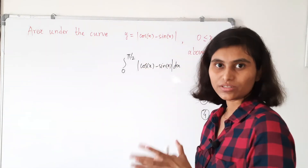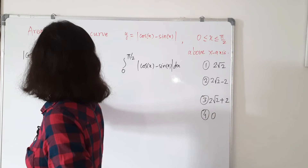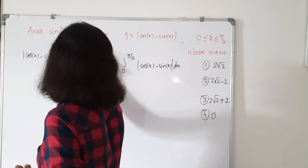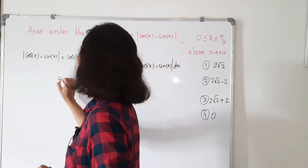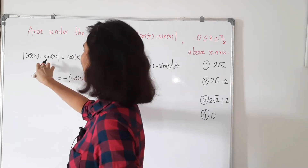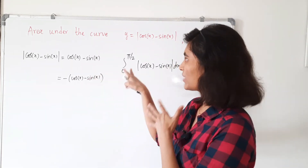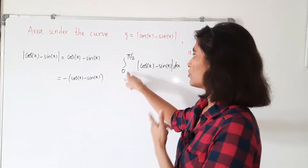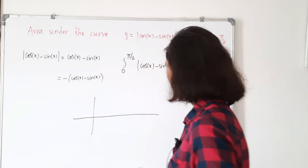Here the modulus plays an important role. |cos x − sin x| equals cos x − sin x when cos x − sin x is positive, and equals minus (cos x − sin x) when cos x − sin x is negative. So we just need to find the values of x where cos x − sin x is positive and negative for x between 0 and π/2. The easiest way is to use the graph, so let's draw graphs of sin x and cos x.